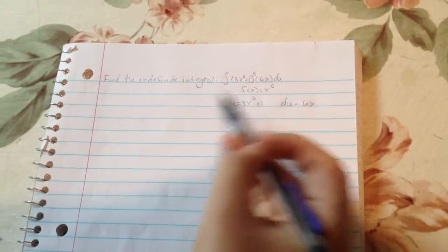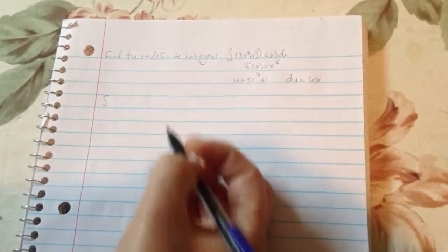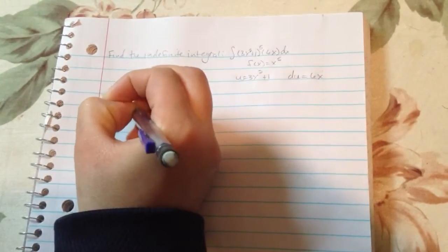So when I rephrase my integral, it is going to be integral of u to the 5th du.